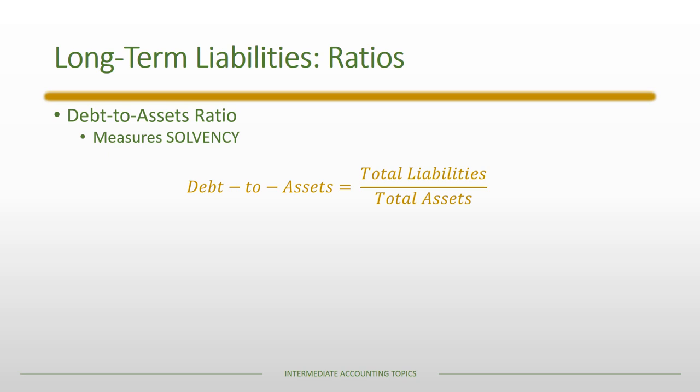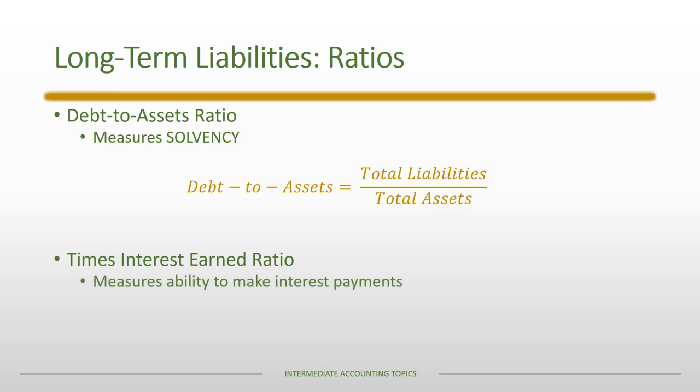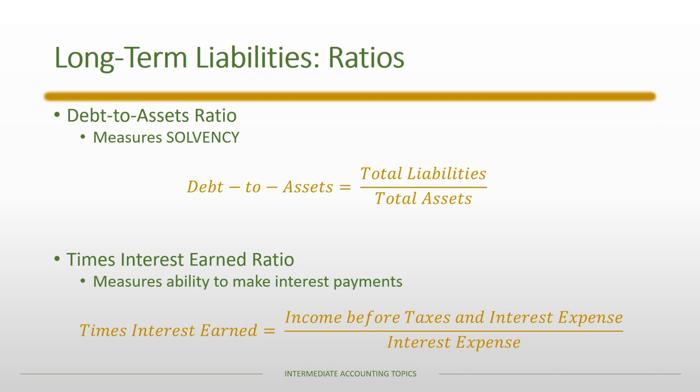Like any ratio, we wouldn't say good or bad based on the number alone — we look at industry standards, the company over time, and each situation to determine whether the solvency ratio is appropriate. The second ratio is the times interest earned ratio, which measures a company's ability to make interest payments. It equals income before taxes and interest expense divided by interest expense. The higher the ratio, the better able the company is to make interest payments, whether through higher income or lower interest expense. Context is important for this measure as with any other ratio.